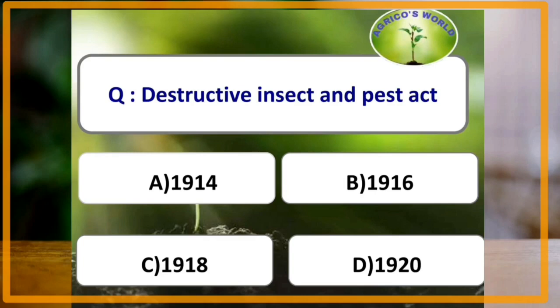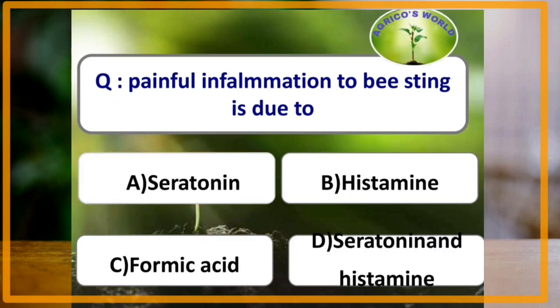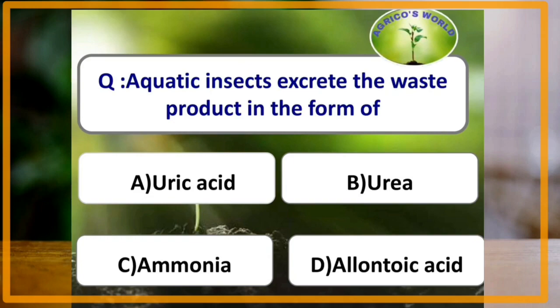The Destructive Insect and Pest Act came into existence in the year 1914. Painful inflammation due to bee sting is due to formic acid. First photostable synthetic pyrethroid is permethrin.